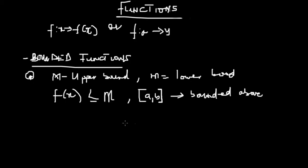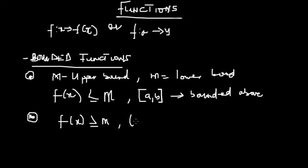For bounded below, lowercase m represents the lower bound. Once you find any function f(x) and f(x) is greater than or equal to the lower bound m, and you are given an open set of values (a, b) — notice the difference: upper bound uses a closed set and lower bound uses an open set — then once your function is greater than the lower bound, it is bounded below.